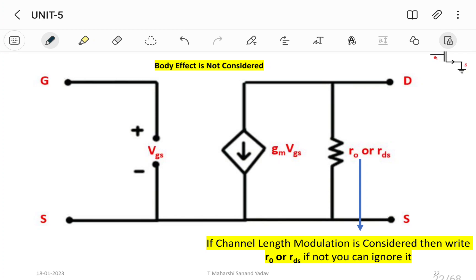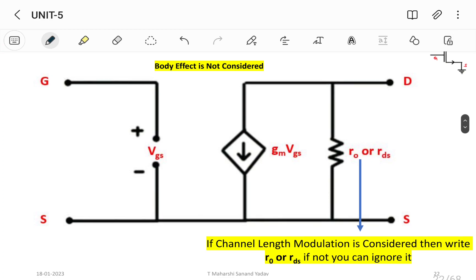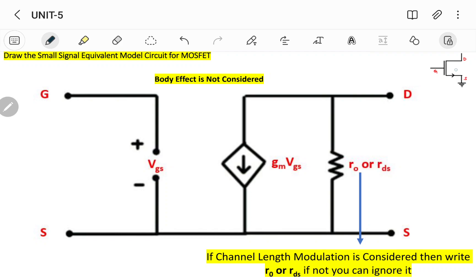Now let us see the small signal equivalent model for NMOS where body effect is not considered. Here you can see the symbol of NMOS which contains three terminals. In the same order we need to take here: the left hand side contains gate, so I've taken gate here. At the ground part source is there, so this complete line will be source, and topmost is drain.